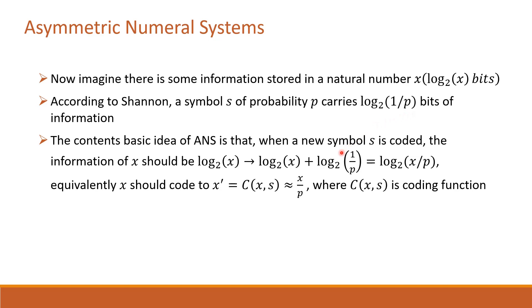The basic idea of ANS is that when a new symbol s is coded, log(1/p) bits of information will be added to log(x) bits of information. The coding function we make should ensure that new natural number x' encoded with s should be as close to x/p as possible in order to reduce inaccuracy.